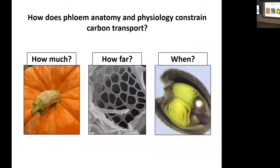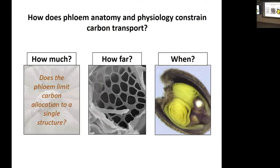I want to talk about three different projects I've worked on that try to get at the connection between structure and function, organized around three different questions: how does phloem physiology and anatomy impact how much carbon can be moved in a plant, how far it can be moved, and when it can be moved. I'll start with the seasonally appropriate first one — work on pumpkins, since it's almost Halloween.